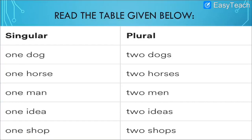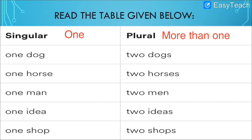Singular means one, plural means more than one. One dog — two dogs (add S). One horse — two horses (add S or ES). One man — two men: here there is a spelling change, M-A-N becomes M-E-N. We change A to E because it is an irregular plural. One idea — two ideas (add S). One shop — two shops (add S).